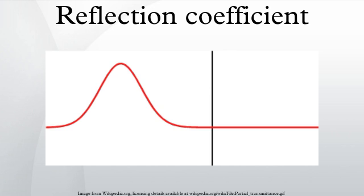In physics and electrical engineering, the reflection coefficient is a parameter that describes how much of an electromagnetic wave is reflected by an impedance discontinuity in the transmission medium. It is equal to the ratio of the amplitude of the reflected wave to the incident wave, with each expressed as phasors.